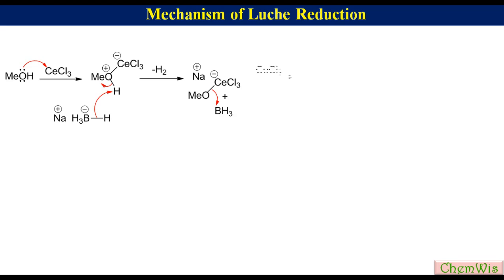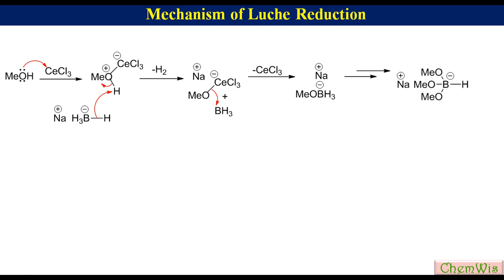The boron-hydride bond from NaBH4 attacks on this acidic proton, liberates hydrogen to produce a methoxy adduct of cerium chloride and BH3. Methoxide transfer to BH3 regenerates cerium chloride to produce sodium methoxy borohydride. Two more hydride ions from sodium methoxy borohydride are replaced with methoxide by the same process to generate sodium trimethoxy borohydride. This sodium trimethoxy borohydride is the reducing agent in Luche reduction.